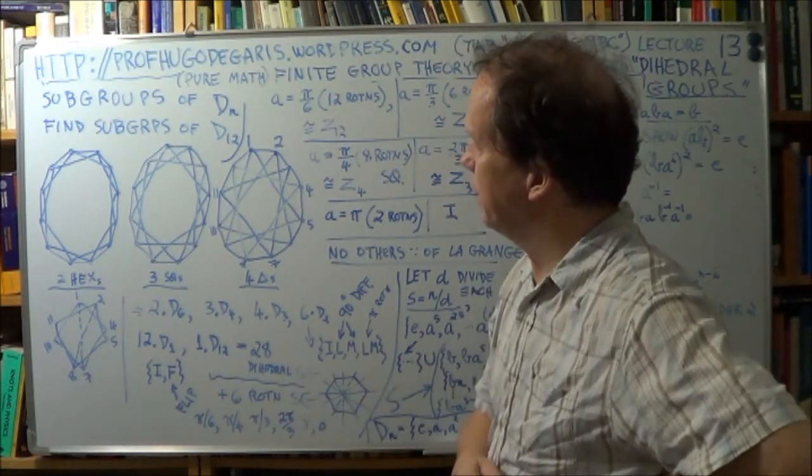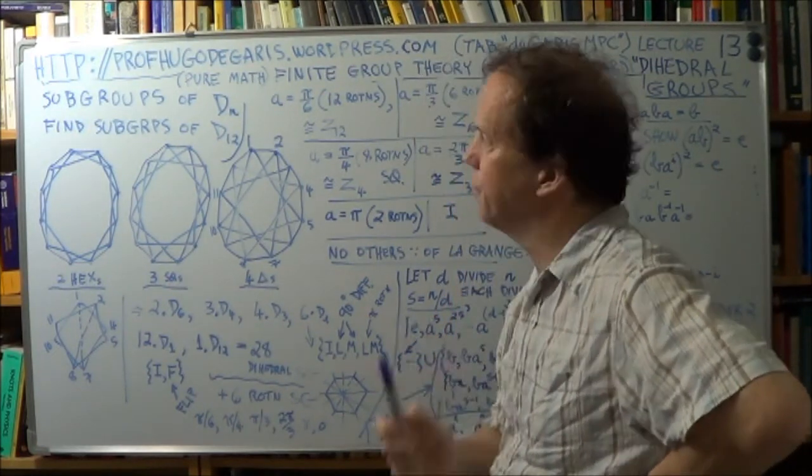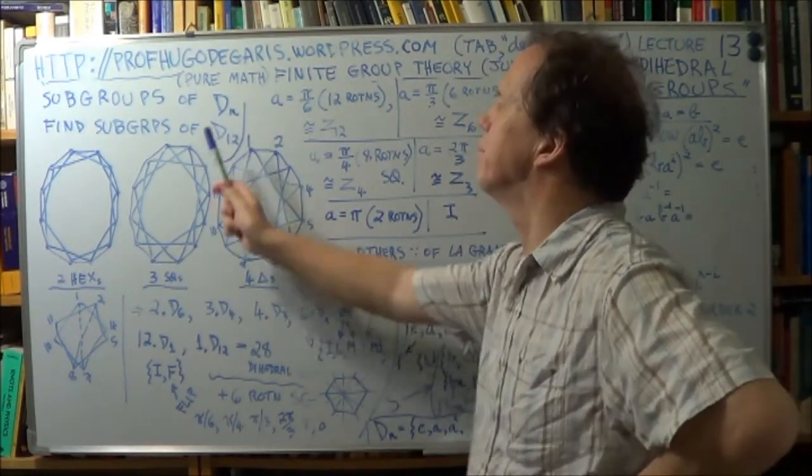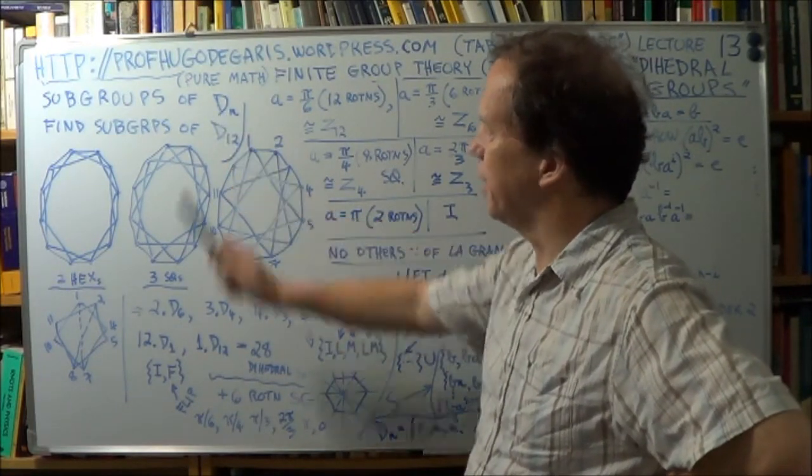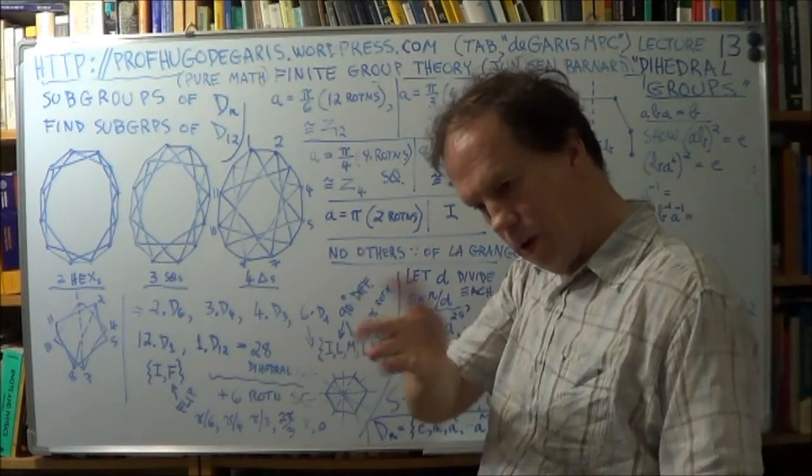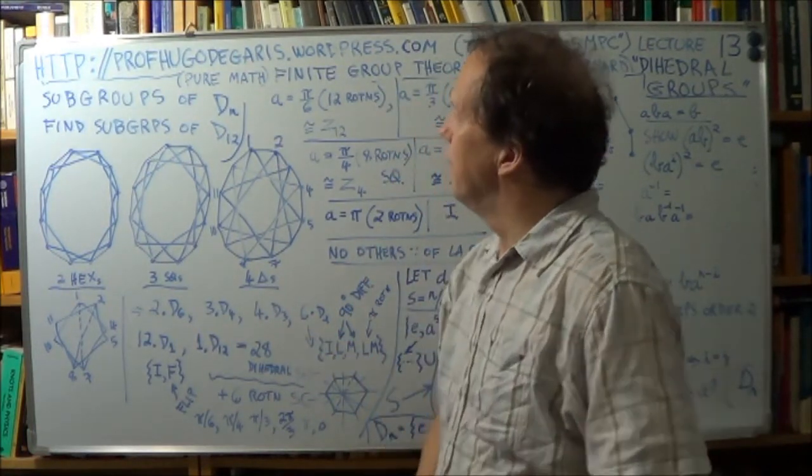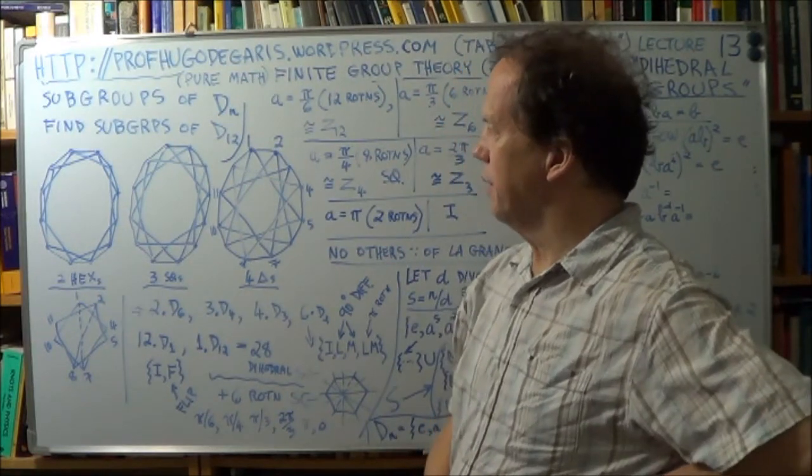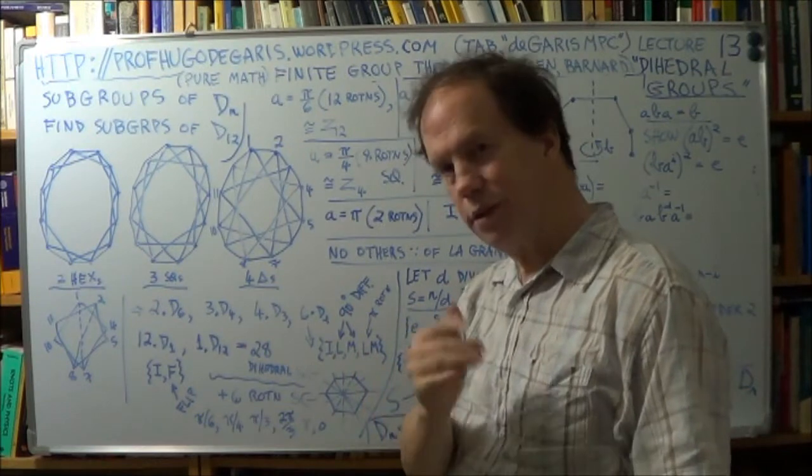Right, so we're talking about the subgroups of D of N, well, of L2. The dihedral groups, the groups which have a kind of flipping of two faces of a geometrical object like triangles flipping and squares flipping and so forth.